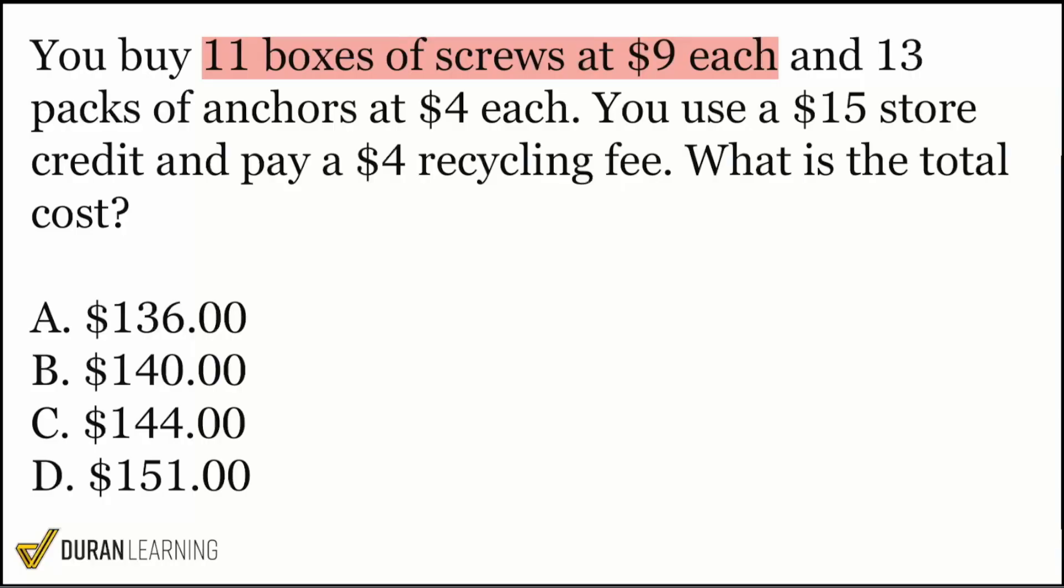Because if we're trying to get that total cost, if we're trying to work our way up to that total cost, then what that tells us is 11 boxes at nine dollars per box, multiply to get the total cost there. Same thing, similar reasoning over here: 13 packs of anchors at four dollars each. You're saying four dollars per pack of anchors, so four dollars per pack of anchors times 13 anchors, that'll give us the total cost of the anchors.